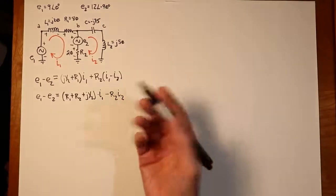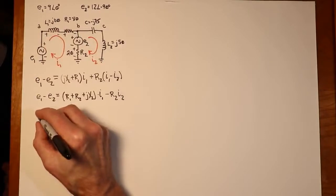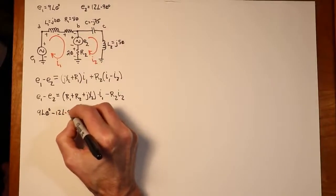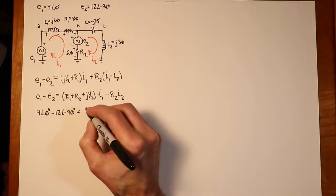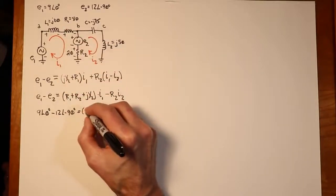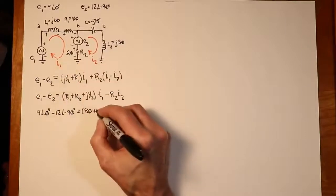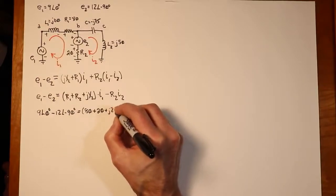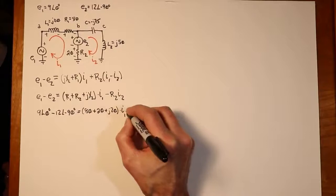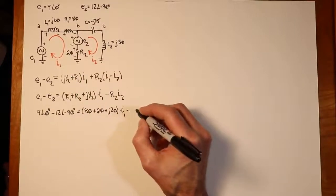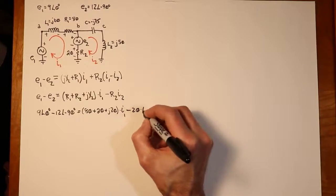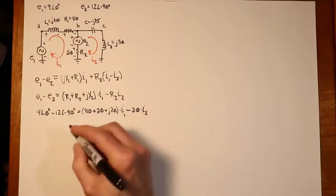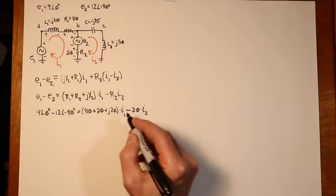Now we can plug in the numbers. E1 is specified as 9 at an angle of 0. E2 is specified as 12 at an angle of minus 90. R1 is 80 ohms. R2 is 20 ohms. And JXL is specified as J20. And then continuing. R2 is 20 ohms. So we have a negative 20 ohms times I2.